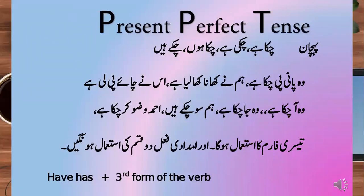The third lesson is about the translation of the present perfect tense. The identification markers in Urdu are very important: chuka hai, chuki hai, chuka hoon, chuke hai, ya hai li hai, or any such sentences in which we can find that the work is completed. Perfect means something which is completely done.